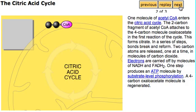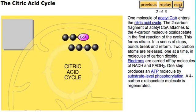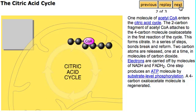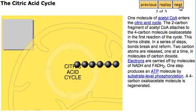One molecule of acetyl CoA enters the citric acid cycle. The 2-carbon fragment of acetyl CoA attaches to the 4-carbon molecule oxaloacetate in the first reaction of the cycle, forming citrate. In a series of steps, bonds break and reform.